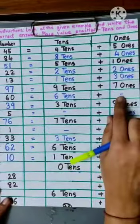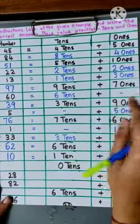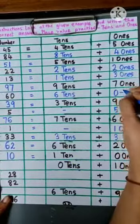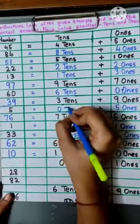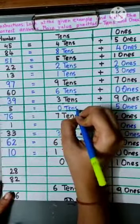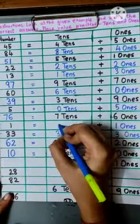Here where we have left this dash, you can also write 0 ones. Here we can write 0 tens in both these blank spaces.